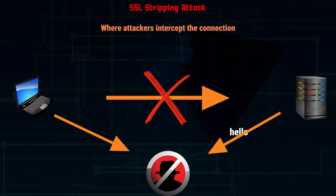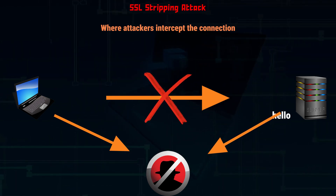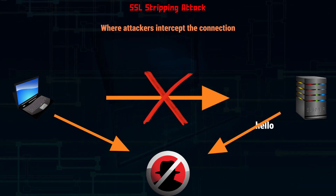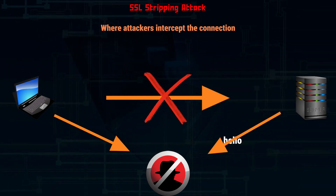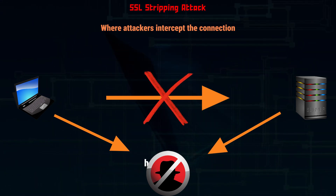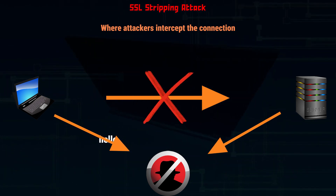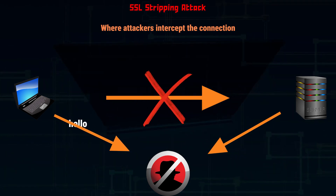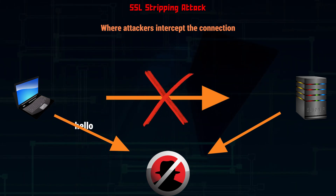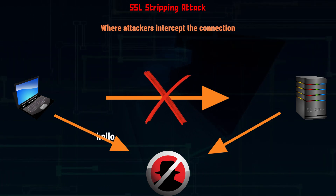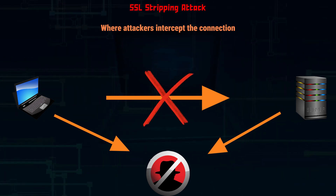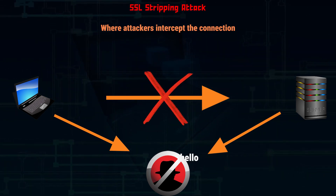All the data transferred from the user will go via the attacker's server rather than going directly to the legitimate server. Similarly, the server response will be sent via the attacker's server in the middle. Since there is no encrypted communication between the user and server, all messages transferred over this connection are exposed to everyone, including the attacker. Most victims will not be aware that the URLs they receive are on an insecure HTTP connection.